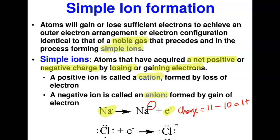Chlorine has seven electrons in its outermost shell. To be completely filled it needs just one more electron, so it gains one. It now has a complete shell but has acquired a net negative charge. Chlorine has 17 protons; after gaining one electron it has 18 electrons. So 17 minus 18 gives −1, and that is why chlorine acquires a net charge of −1.